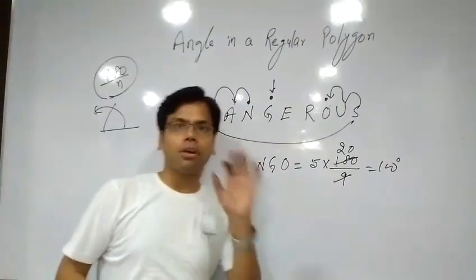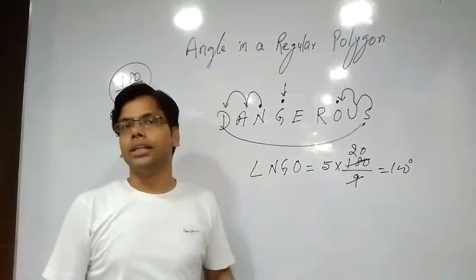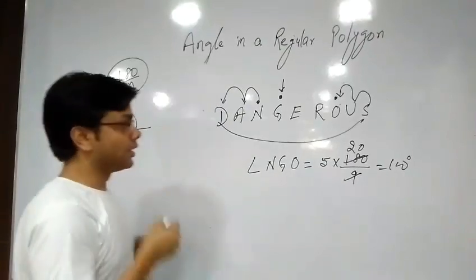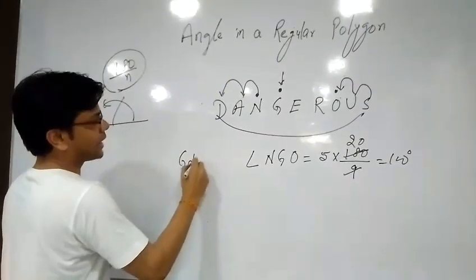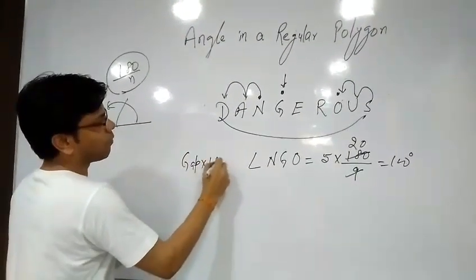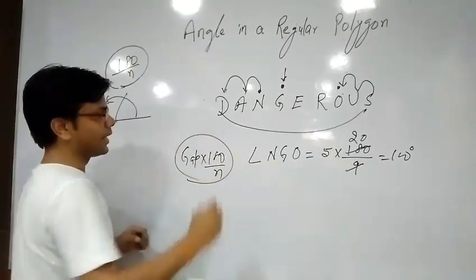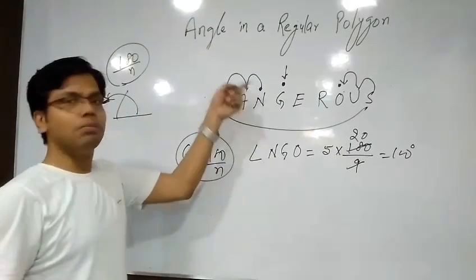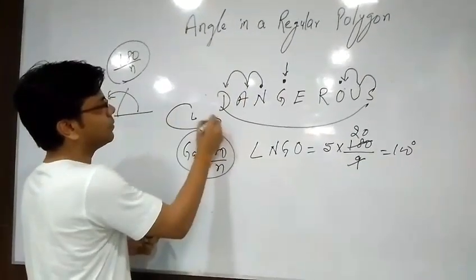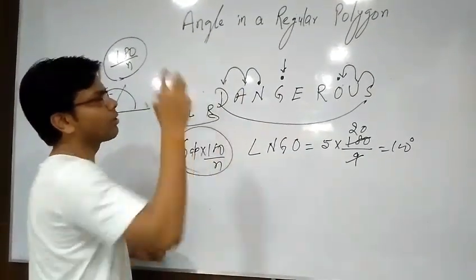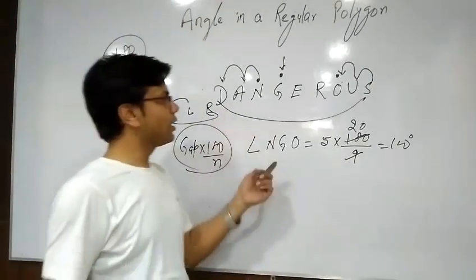This is the shortest way to find the angle in any regular polygon. The formula or concept is: angle equals gap multiplied by 180 upon n. The gap is the anticlockwise movement from the left vertex to the right vertex passing through the middle point. Thank you and happy learning!